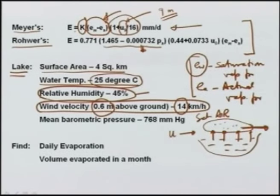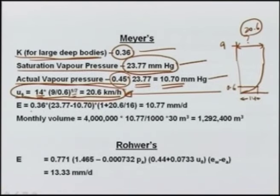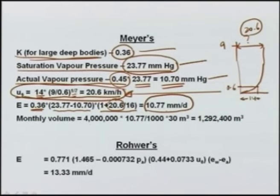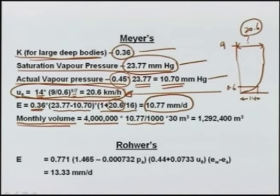Looking back at Meyer's equation, now we know everything — k, E_w, E_a, and u_9. We can obtain the evaporation rate. k is 0.36, saturation deficit is known, u_9 is 20.6 kilometers per hour. With 1 + u_9/16, i.e., 1 + 20.6/16, this gives an evaporation of 10.77 millimeters per day — almost 1 centimeter per day. For the lake surface area of 4 square kilometers over 30 days, this amounts to 1.29 million cubic meters of water evaporated in a month.